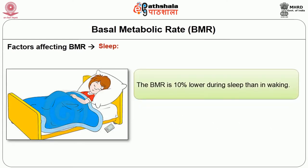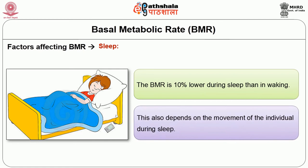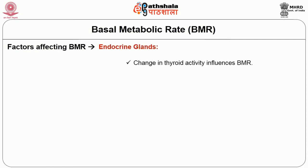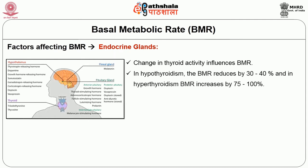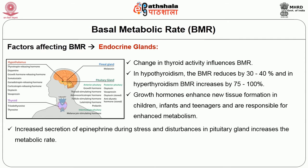Sleep — BMR is 10% lower during sleep than when awake, depending on movement during sleep. Body temperature — BMR increases by 13% for each degree rise in Celsius, or 7% for each degree rise in Fahrenheit. Endocrine glands — changes in thyroid activity influence BMR. In hypothyroidism, BMR reduces by 30–40%; in hyperthyroidism, BMR increases by 75–100%. Growth hormones enhance new tissue formation in children, infants and teenagers and are responsible for enhanced metabolism. Increased secretion of epinephrine during stress and disturbances in pituitary gland increase metabolic rate; metabolism also increases prior to the menstrual cycle.